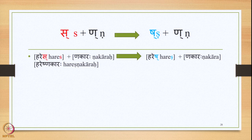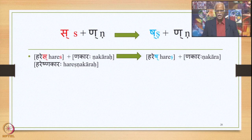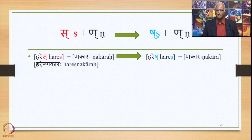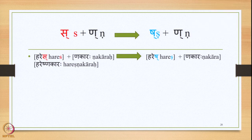Finally, we have SA followed by NA. In this environment 8441 applies and substitutes SA by SHA, so we have SHA plus NA as output. We have HARISH plus NAKARAHA — once again this is the example of Sandhi between two Padas as part of the sentential combination. The output generated by the application of 8441 is HARISH plus NAKARAHA, giving HARISH-NAKARAHA.